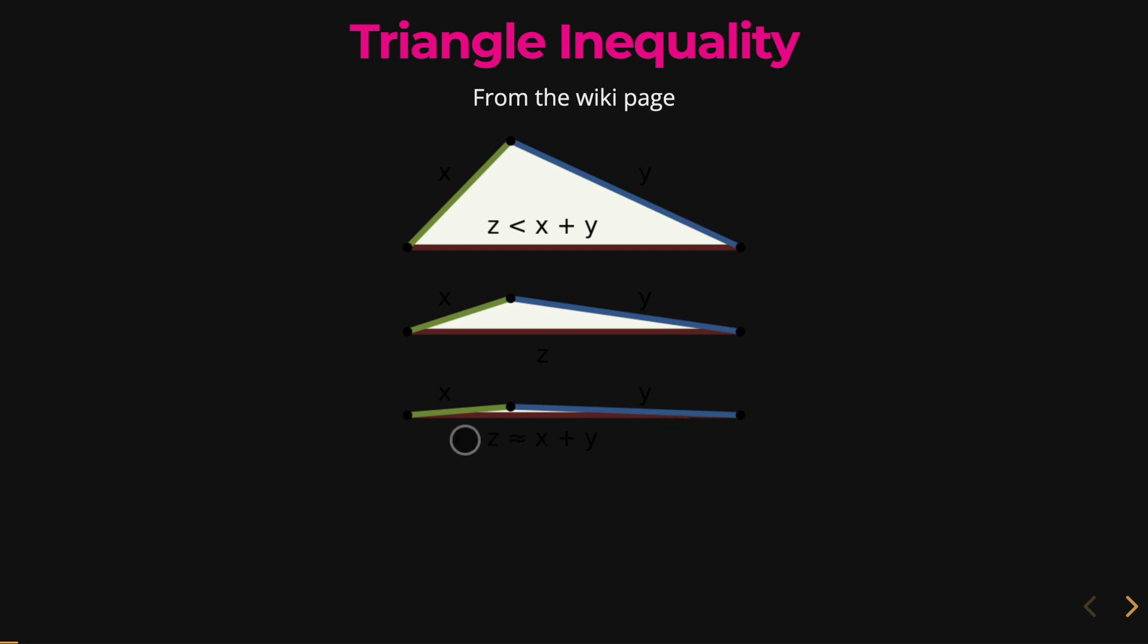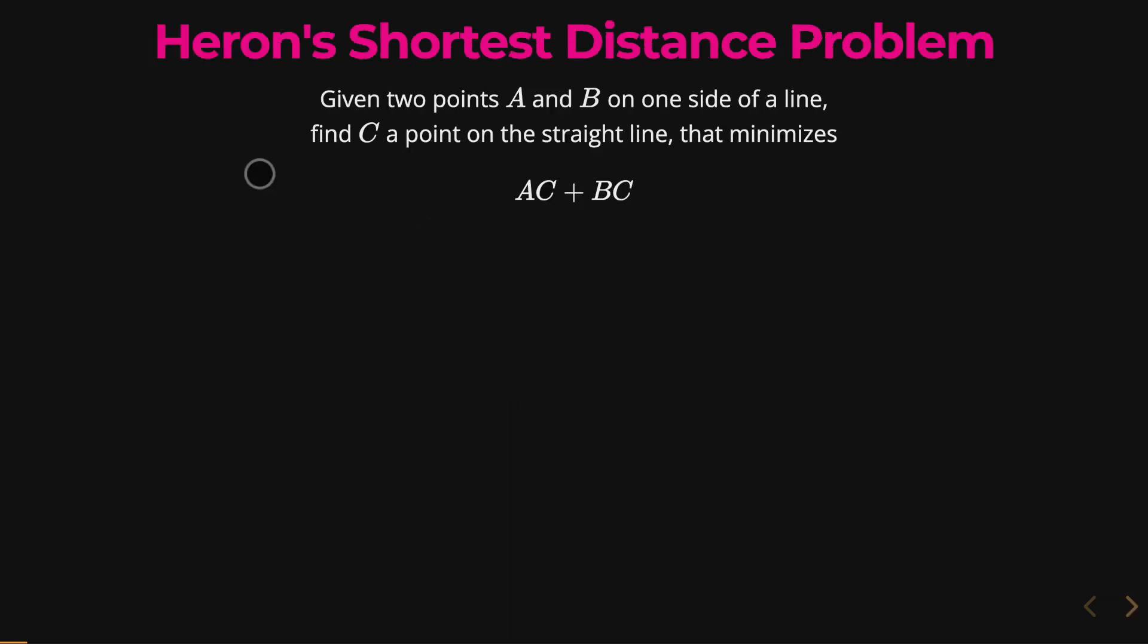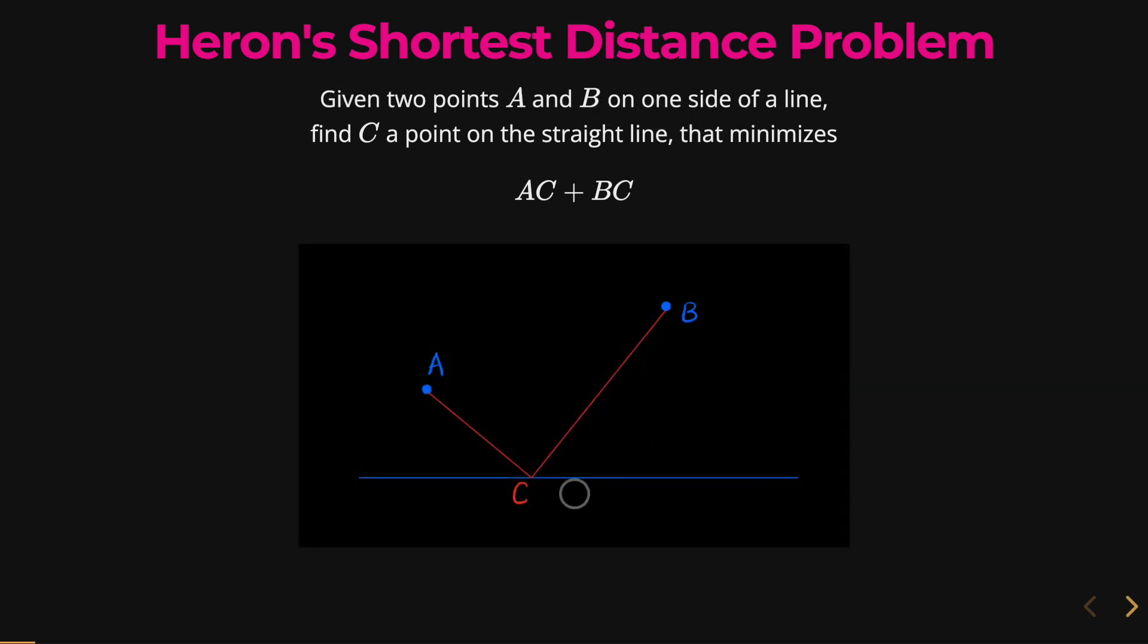Now let's take a look at a sort of simplified problem, but it's still similar. We have Heron's shortest distance problem. In this problem, you are given two points A and B on one side of a line, and you are to find c, a point somewhere on this line that will minimize AC plus BC, basically minimizing the distance.